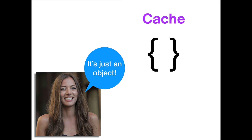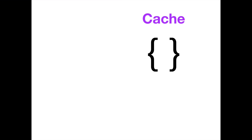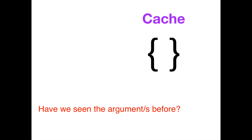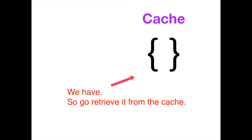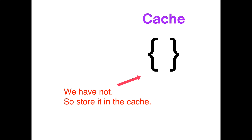When we run the memoized version of our function, it's going to ask the question: have we seen that argument or those arguments before? If we have, it's going to go to the cache object and retrieve the result directly. However, if we haven't seen those arguments before, we're actually going to store that argument and the results of the computation in the cache object so that we can retrieve them next time without having to go through the expensive computational process again and again.